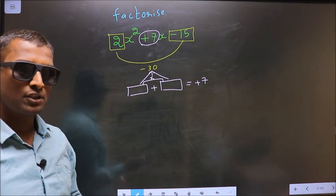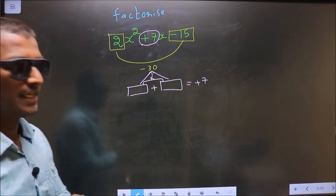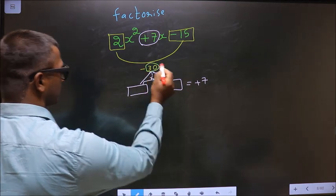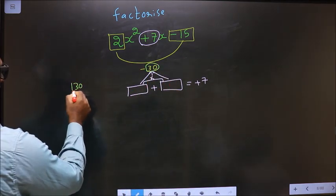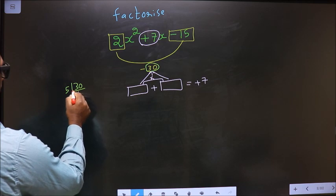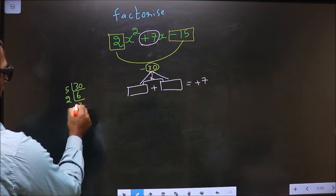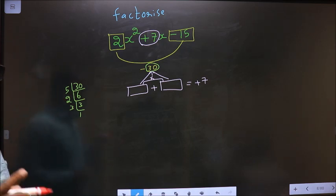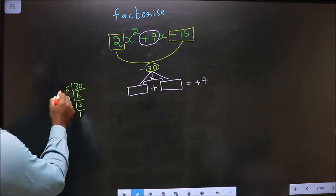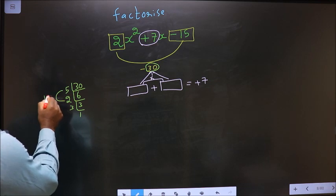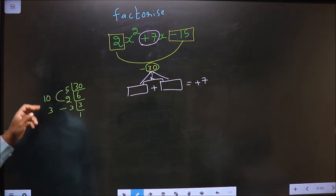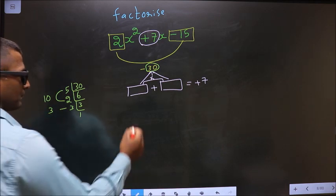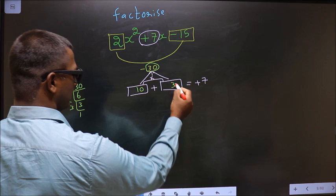Now to get those two numbers, we should take LCM of 30. So 30, start with 5, 6, then 2, 3, 3 and 1. So now the two numbers should be 5 into 2, 10 and 3. 10 minus 3 is 7, 10 into 3 is 30. So you write here 10 and here 3.